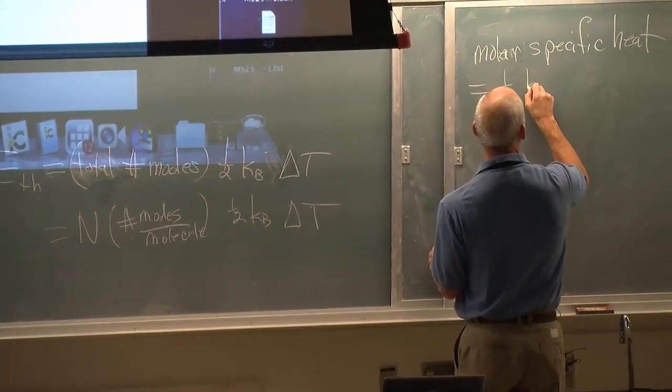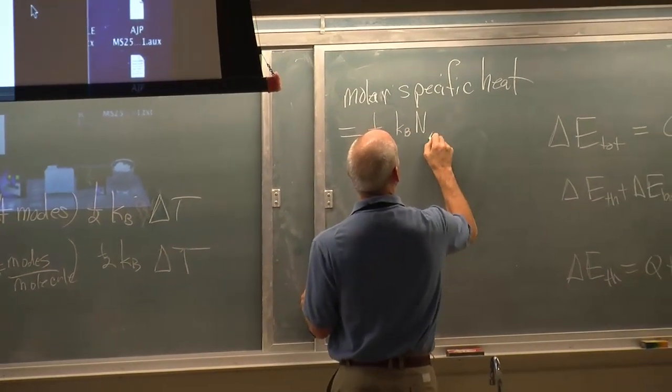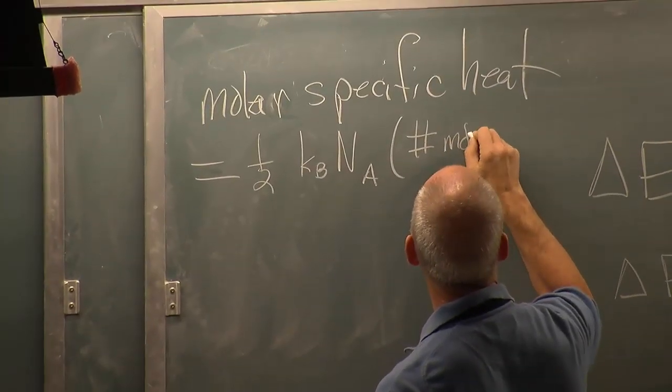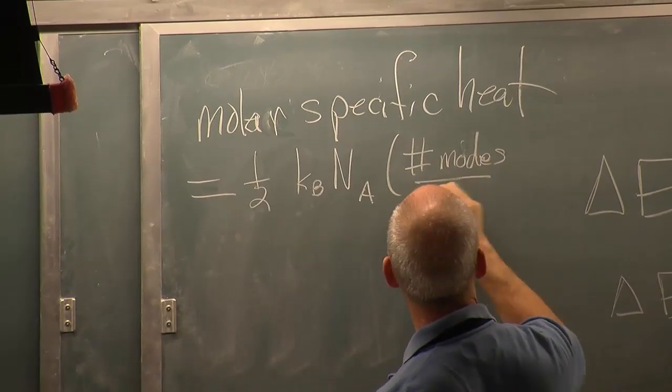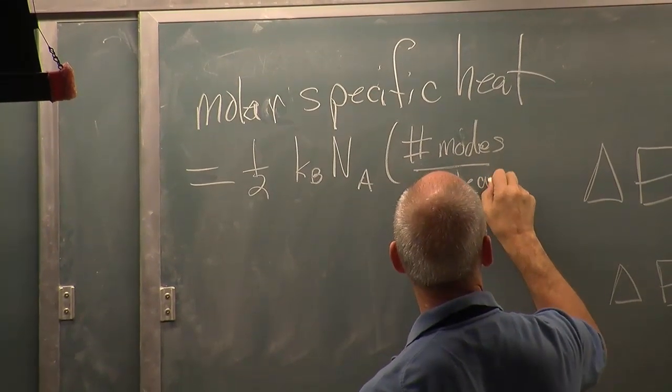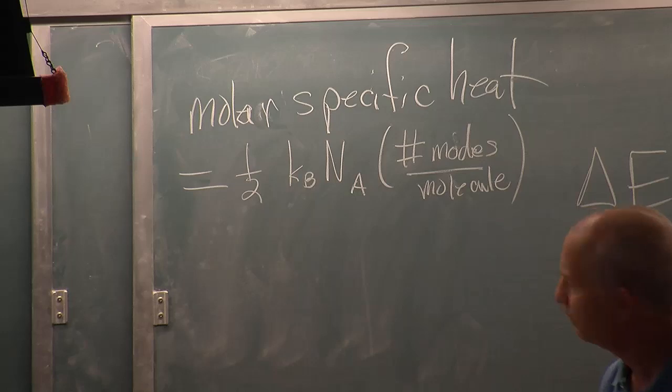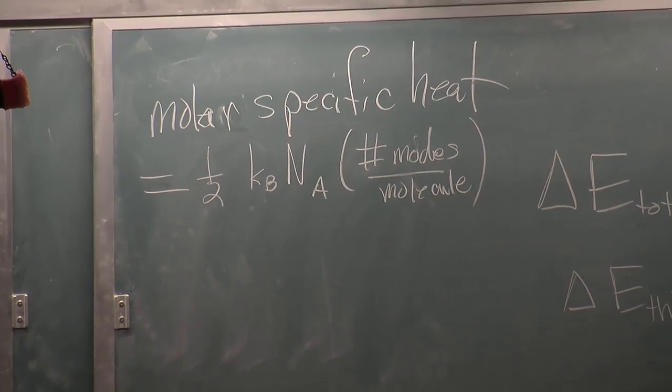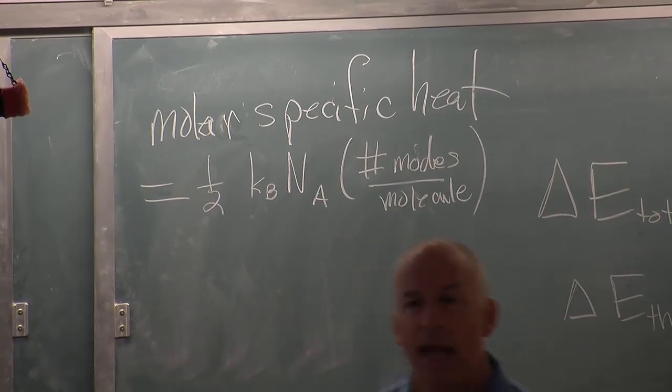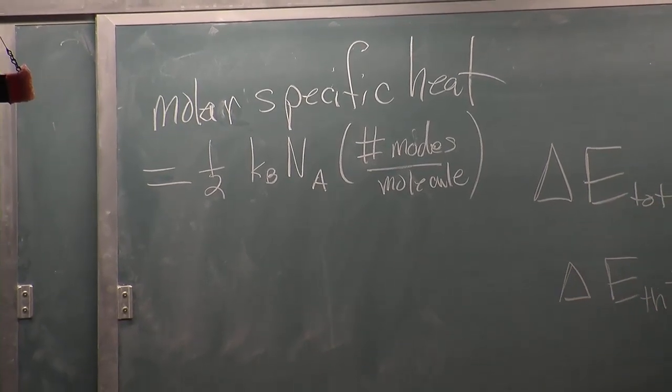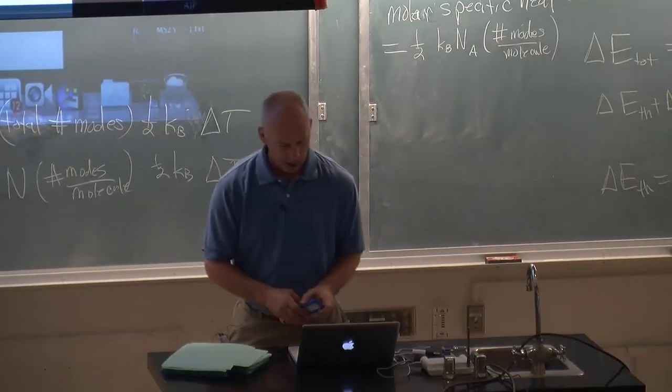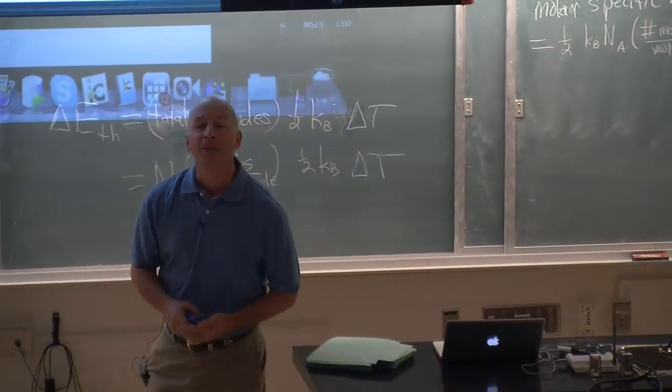If I take this, divide by little n, which is sitting there, I'm left with capital NA, Avogadro's number, times the number of modes per molecule, times one-half KB. There's a one-half, a KB, Avogadro's number, number of modes per molecule, and that's the molar specific heat. So that's something you can estimate by yourself right now for various things.